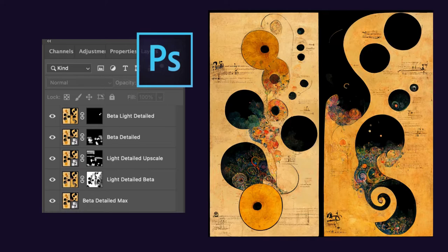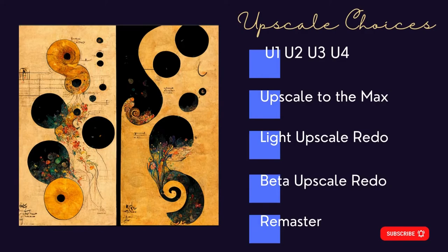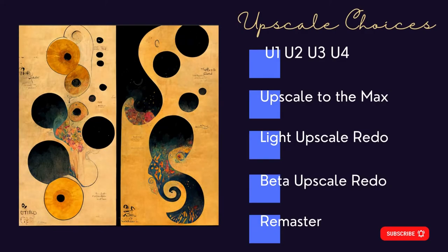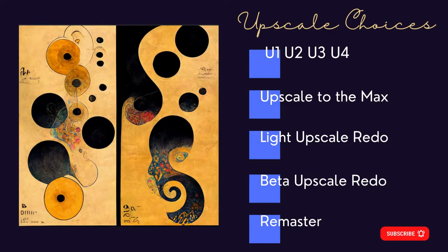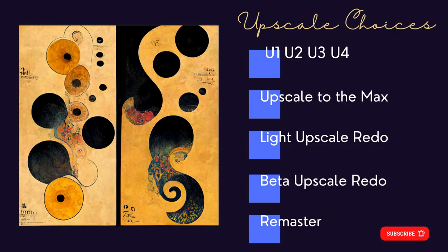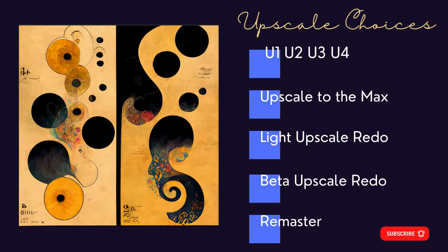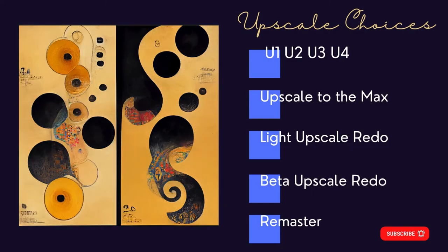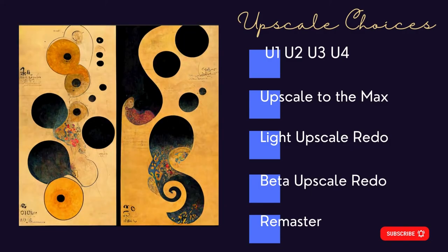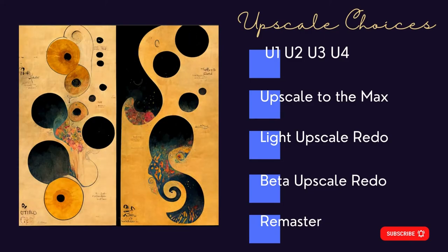The upscale modes in Midjourney all have different strengths. Each works well on different types of images and with different aesthetics. If you create an image that you like but want to vary the details, use the upscale modes — upscale two, three, even four times. You will probably see variations in the details, and it's in these details that your artistic vision will really shine. This is Jen at Making the Photo. Let's make something beautiful.